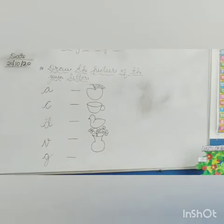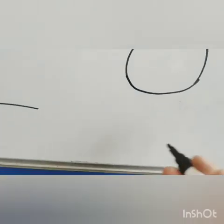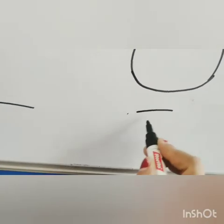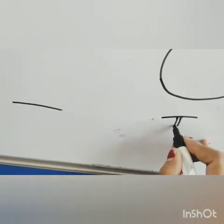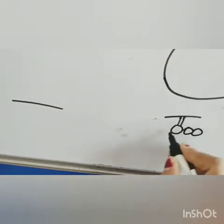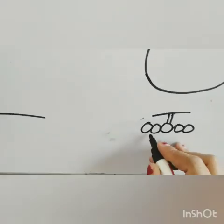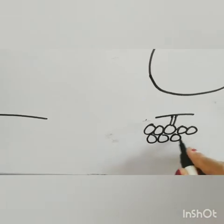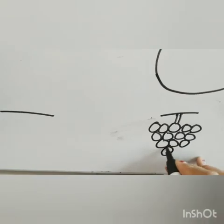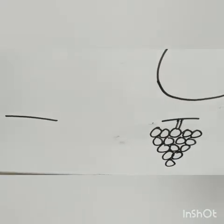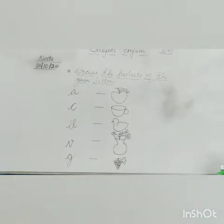Now G, G for grapes. So make grapes here. For making grapes, you have to make first a sleeping line, then two standing lines. Now you have to make small small circles. First one, two, three, four, five - in first line you have to make five circles. Then one, two, three, four circles. Then one, two, three circles. Then two circles, then one circle. Okay, and you can make a leaf of this fruit.